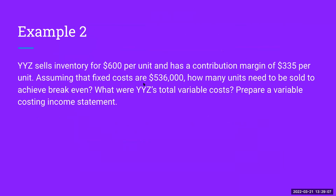Our second example: YYZ sells inventory for $600 per unit. It has a contribution margin of $335 per unit. Assuming fixed costs are $536,000, how many units need to be sold to achieve breakeven? What were YYZ's total variable costs? And prepare a variable costing income statement. Those are the two examples we're going to look at today.